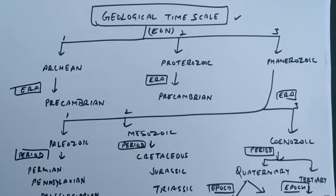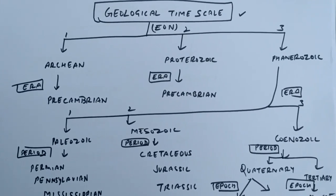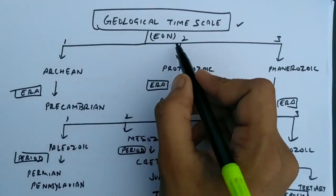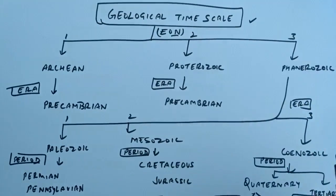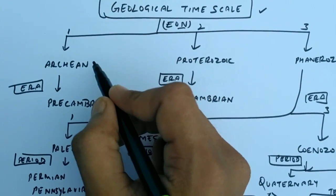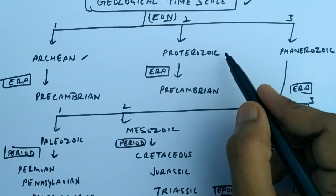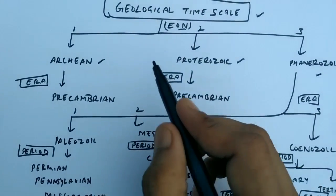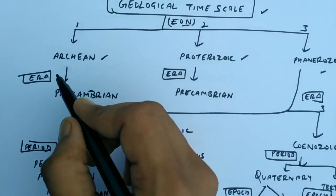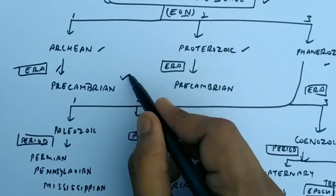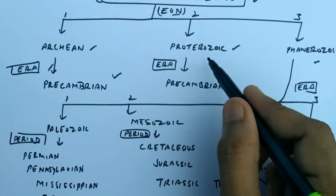First of all, the largest unit of geological time is the eon. There are three eons in the geological time scale: firstly the Archean, second is the Proterozoic, third is the Phanerozoic. After the eon, the second unit is the era. In the Archean there is one era, the Precambrian. Proterozoic also has the era Precambrian.